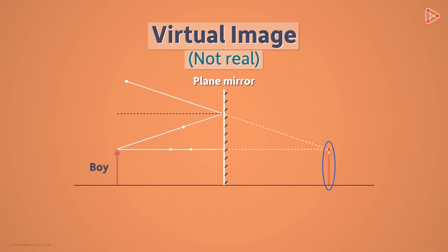A virtual image is formed when the light rays diverge after reflection from the mirror. Every plane mirror forms a virtual image. This is the first characteristic of the images formed by plane mirrors. Images formed by plane mirrors are virtual and not real.